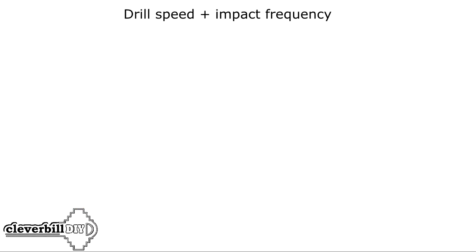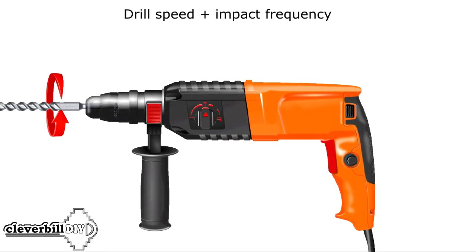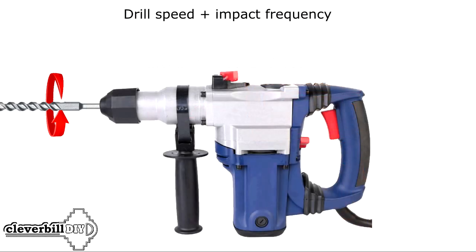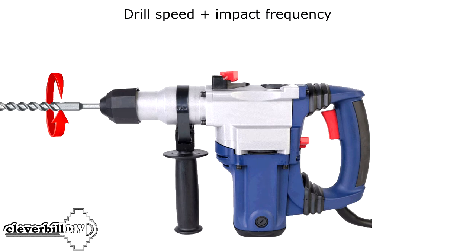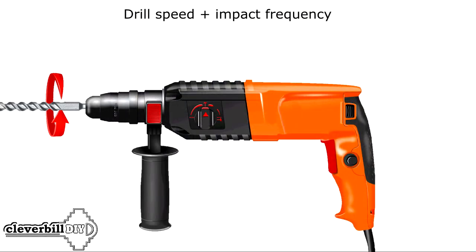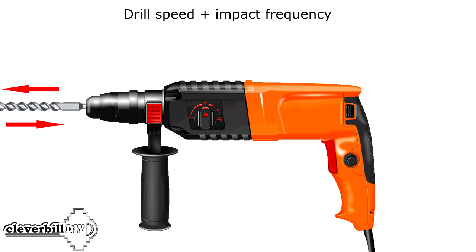The rotation speed of the working element can vary from 230 to 2300 revolutions per minute. Household devices generally have a higher value, around 1000 to 2000 RPM. Professional ones have a smaller value, around 230 to 450 RPM, since they are used only for chiseling and drilling. For home use, a hammer drill with a rotation speed of 1000 to 1500 RPM is sufficient. The impact speed can range from 2150 to 5800 beats per minute, with the best option for home use being 4000 to 4500 beats per minute.